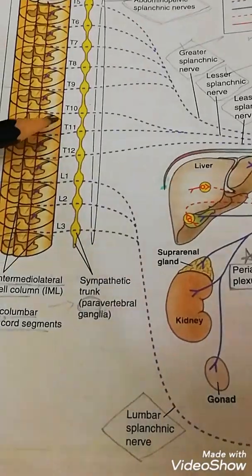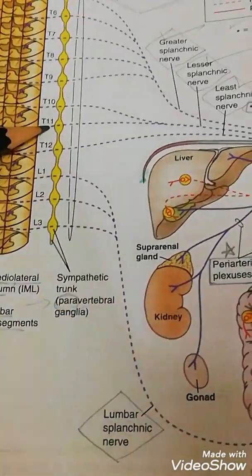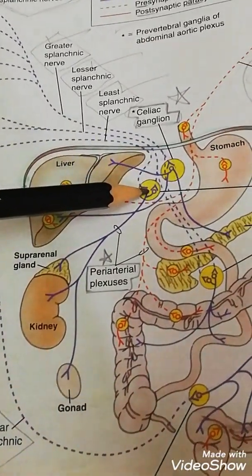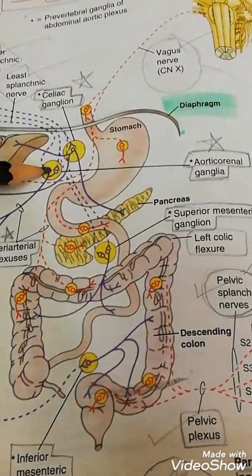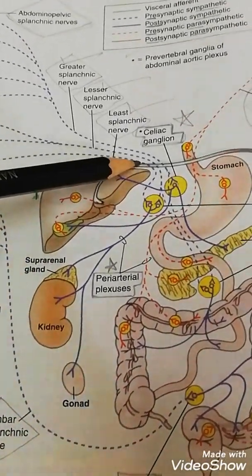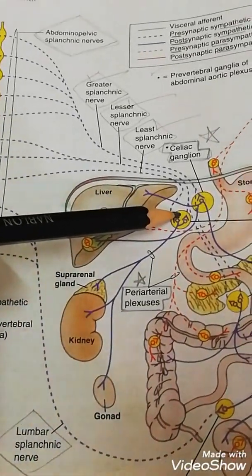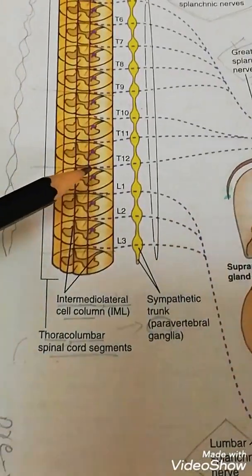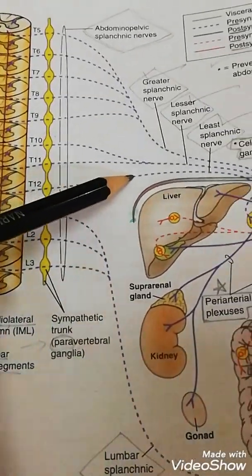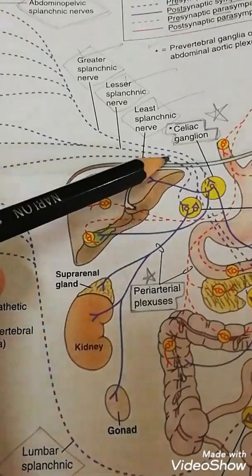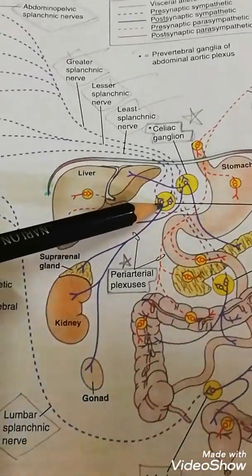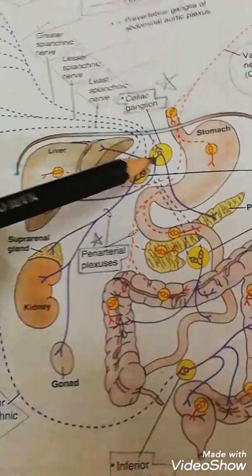Now look at the spinal cord segment again — T10 and T11 are joining to form the lesser splanchnic nerve, again entering another prevertebral ganglia called the aorticorenal ganglia. These are also preganglionic or presynaptic sympathetic fibers, as indicated by the dotted lines. Then T12 spinal cord segment gives rise to another splanchnic nerve called the least splanchnic nerve, which also joins the aorticorenal ganglia.